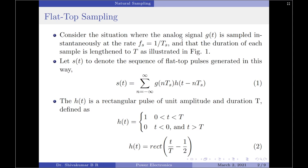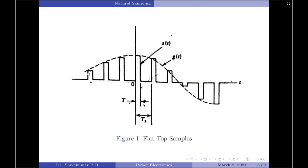Let us start by considering a situation where the analog signal g(t) is sampled instantaneously at a rate fs, given by 1/Ts. Let the duration of each sample after performing instantaneous sampling be lengthened to capital T, as illustrated in Figure 1. We have first performed instantaneous sampling, and the amplitude of each sample is then extended for a duration of capital T.